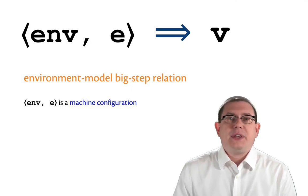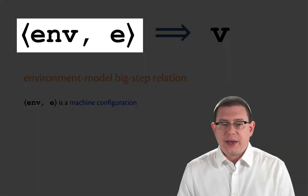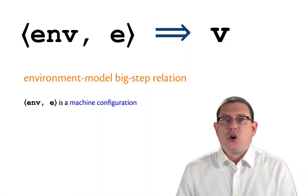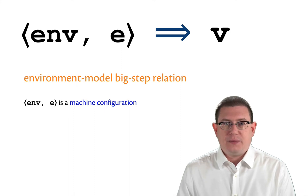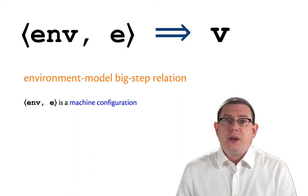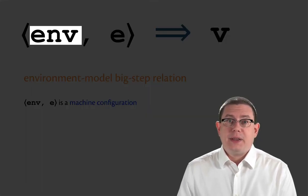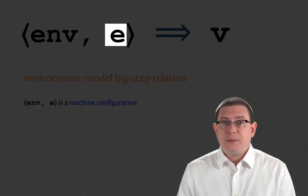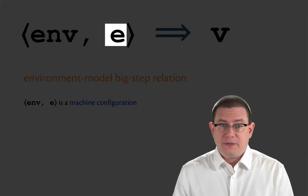So this thing on the left of the arrow in the funny looking angle brackets is called a machine configuration. Think of it as like the current state of the machine as the program is executing. And in fact, you can think of the first component of that as being like the memory, the environment, and the second component of it as being like the program. That's the expression being evaluated.